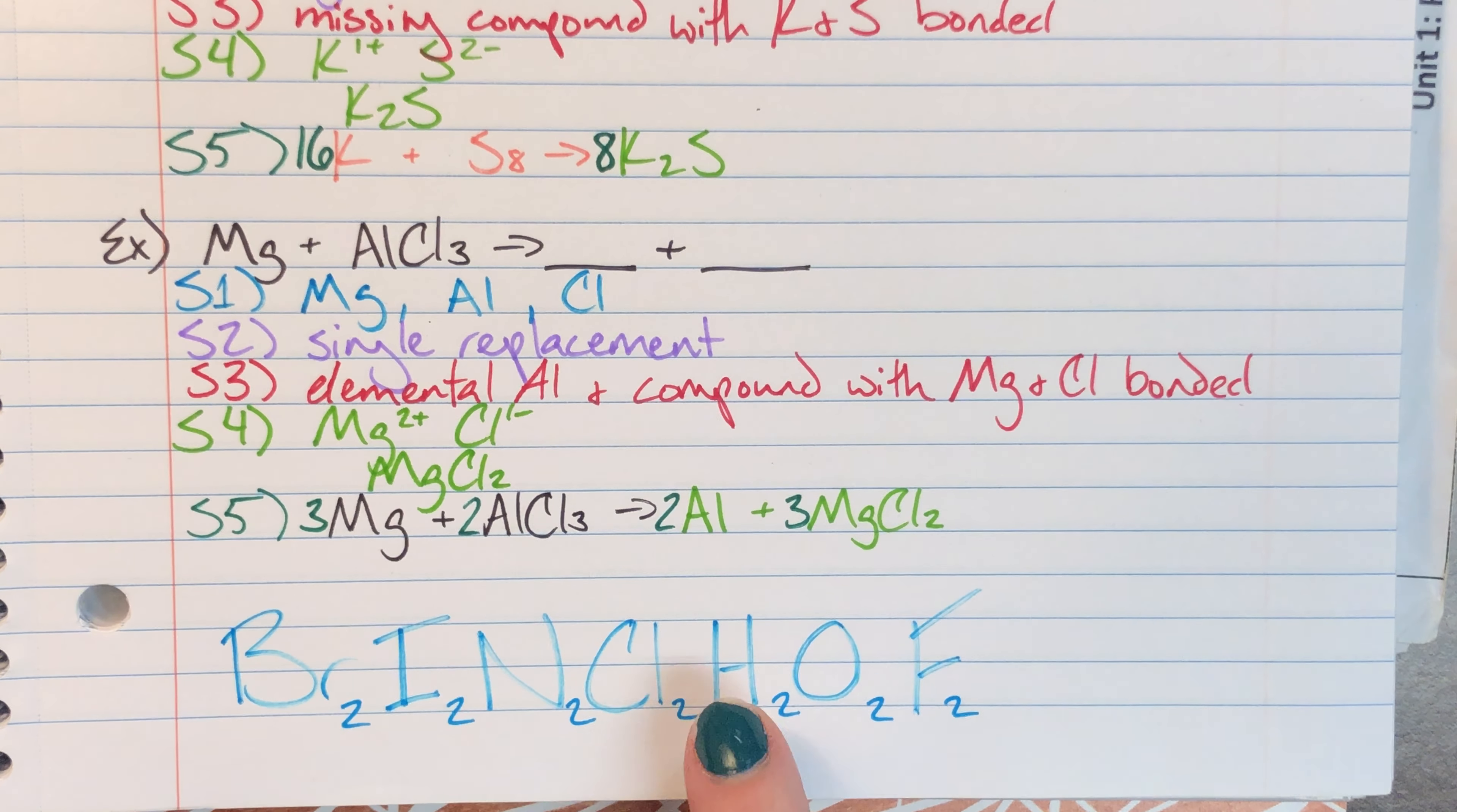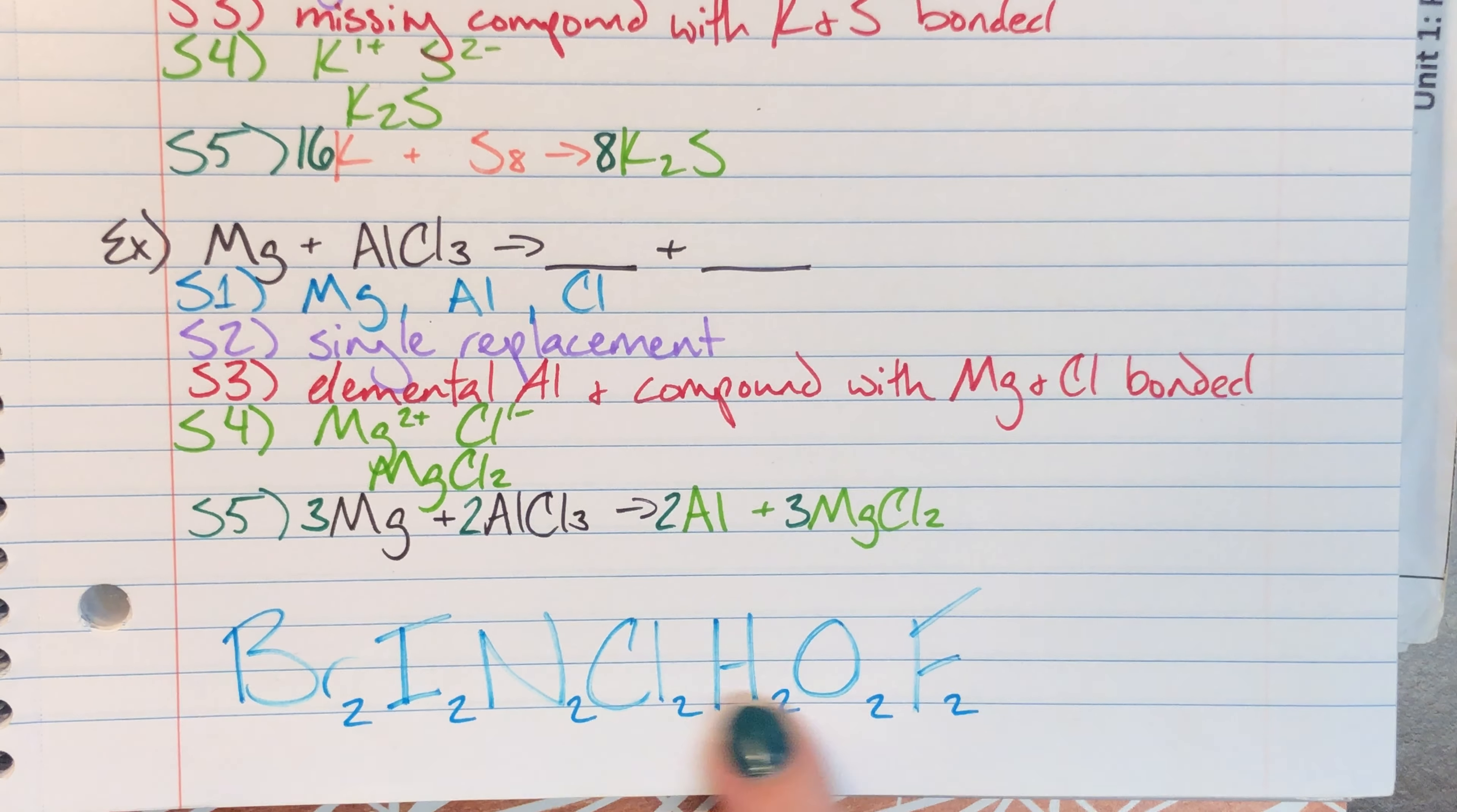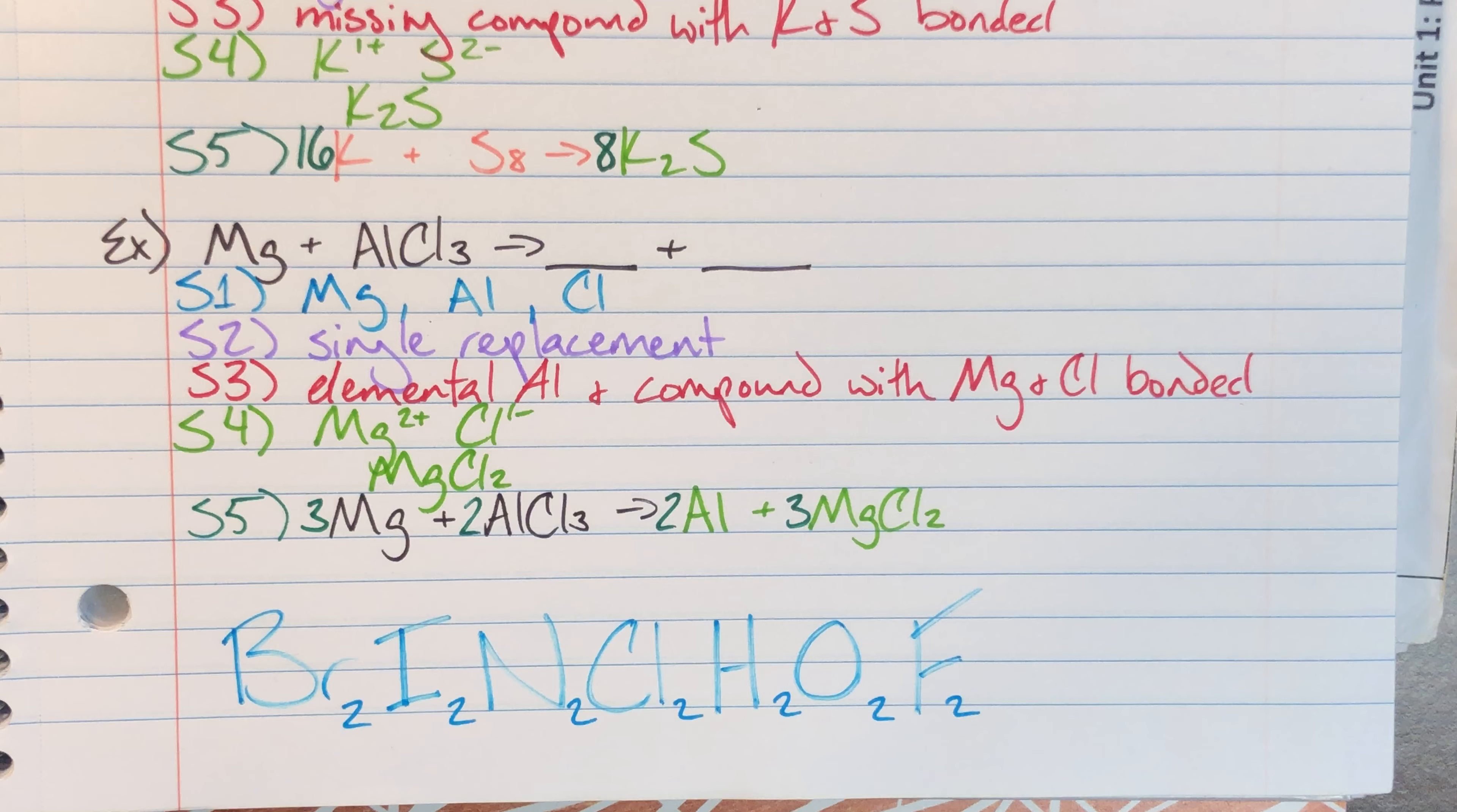They're all going to want to at least be bonded with one other version of themselves if we kick them off of a molecule. And this is important so that you can write that formula correctly and so that you can balance correctly.